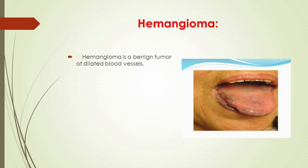Hemangioma is a benign tumor of dilated blood vessels, also known as port wine stain, strawberry hemangioma, or salmon patch. They are characterized by hyperplasia of blood vessels — usually veins and capillaries — in a focal area of submucosal connective tissue. Complete surgical excision offers the best chance of cure, but because of the extent of these benign lesions, significant sacrifice of tissue may be necessary; lesions of the tongue may require near-total glossectomy.